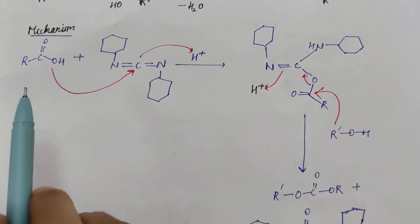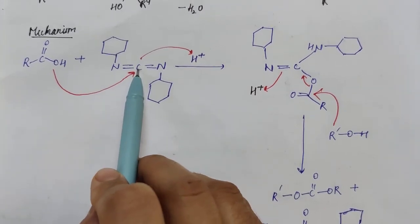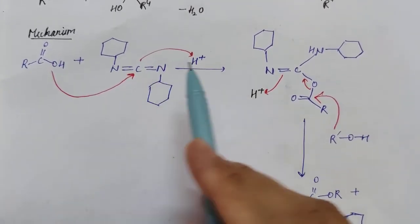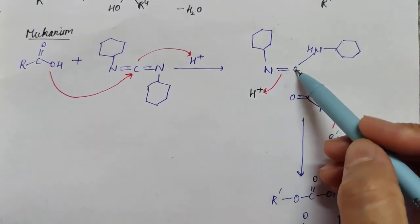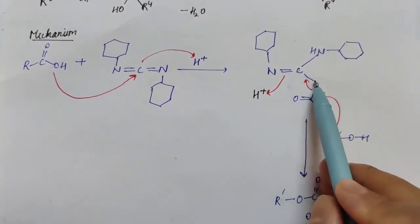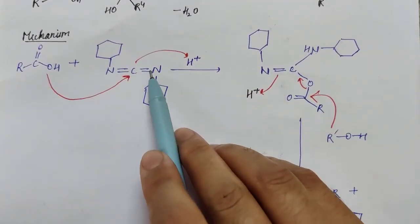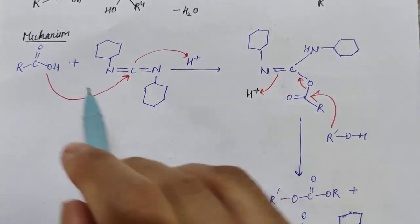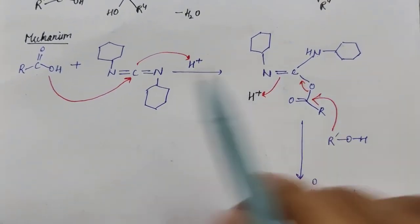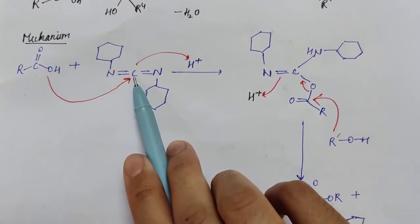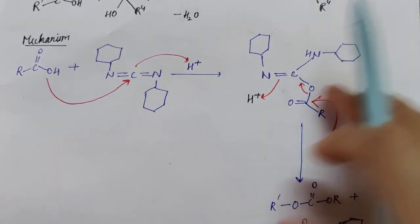In the mechanism, the carboxylic oxygen attacks the central carbon of DCC; the proton is released and a bond to carbon forms. The RCO⁻ group attaches to this carbon while the proton becomes attached to the nitrogen. Essentially, the carbonyl group gets activated, and the nitrogen becomes protonated.